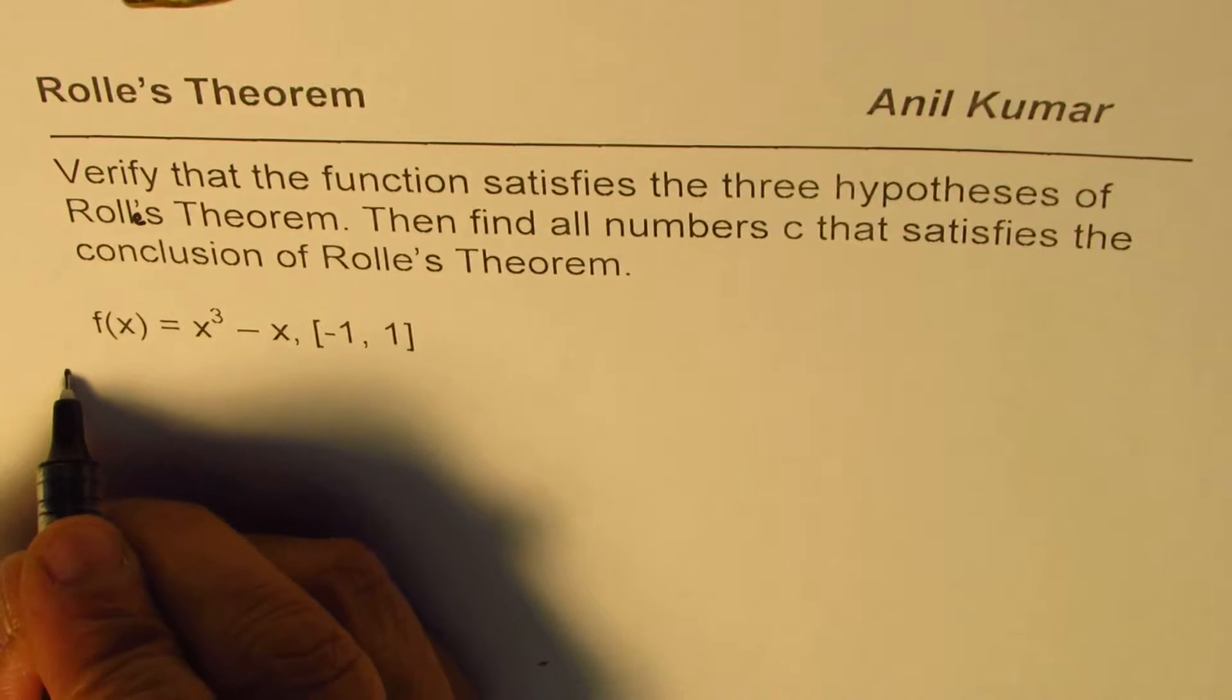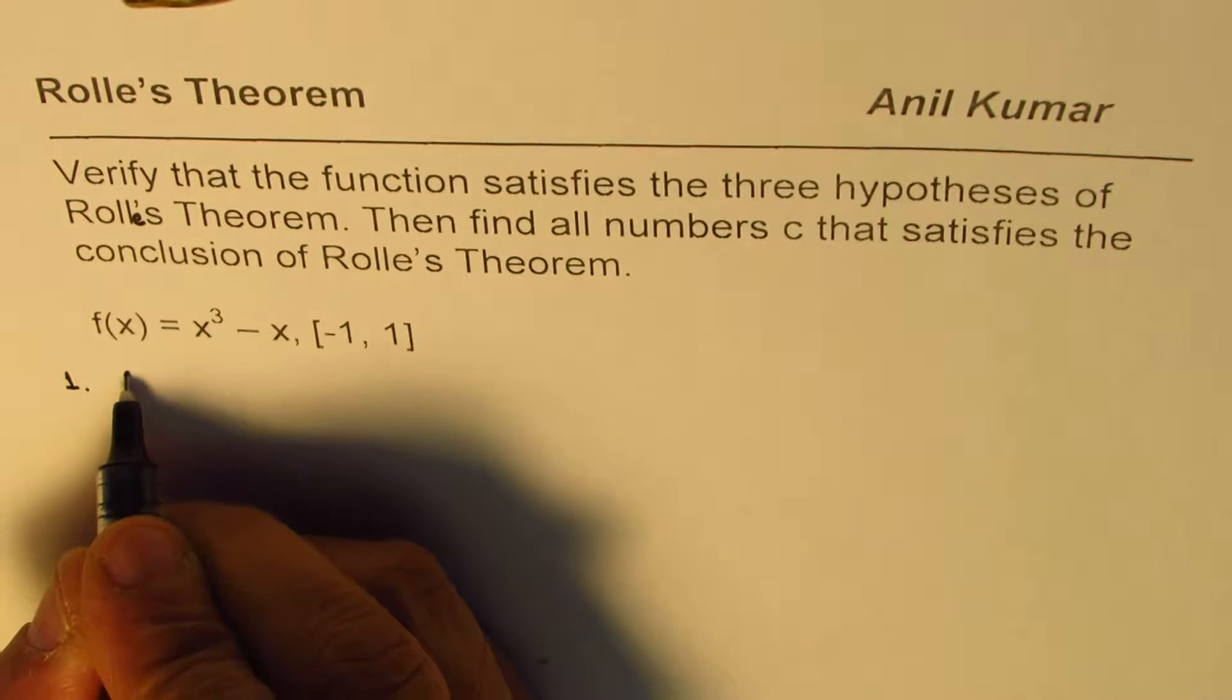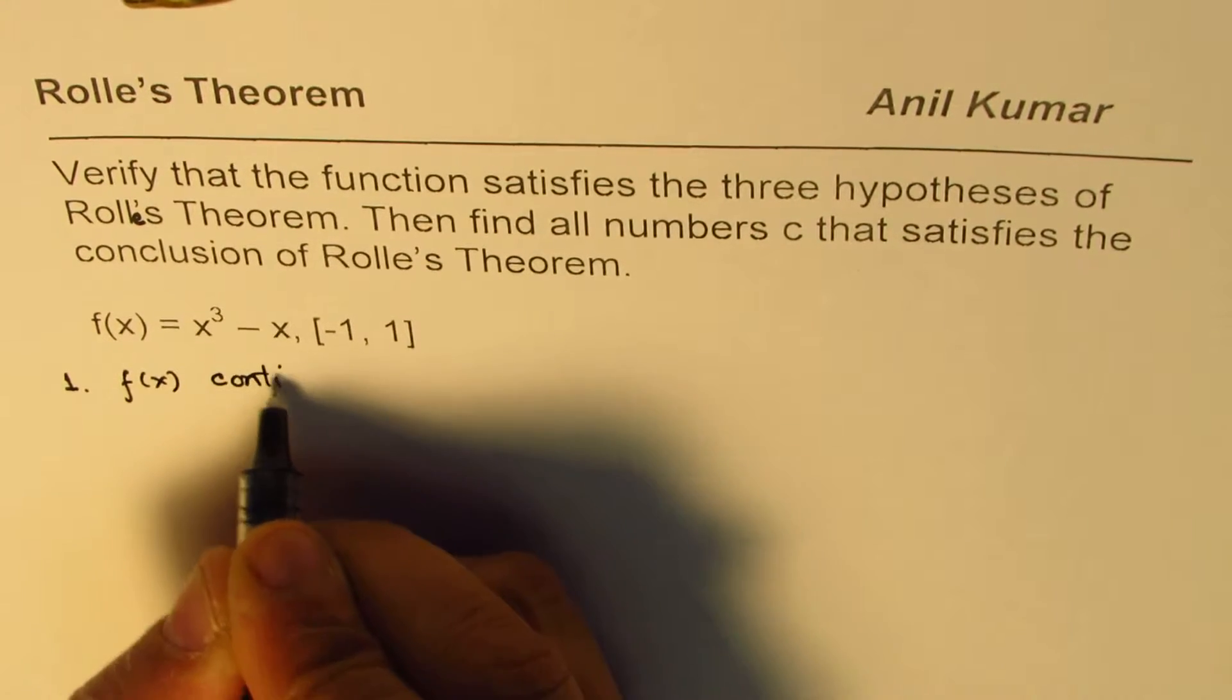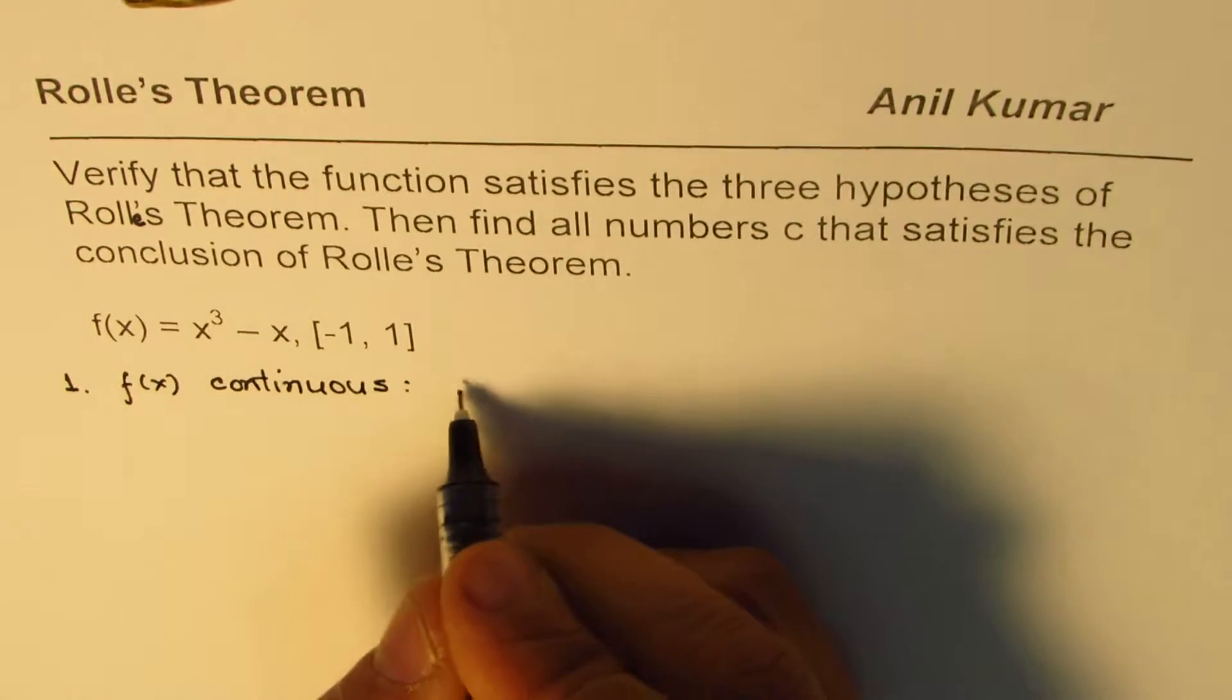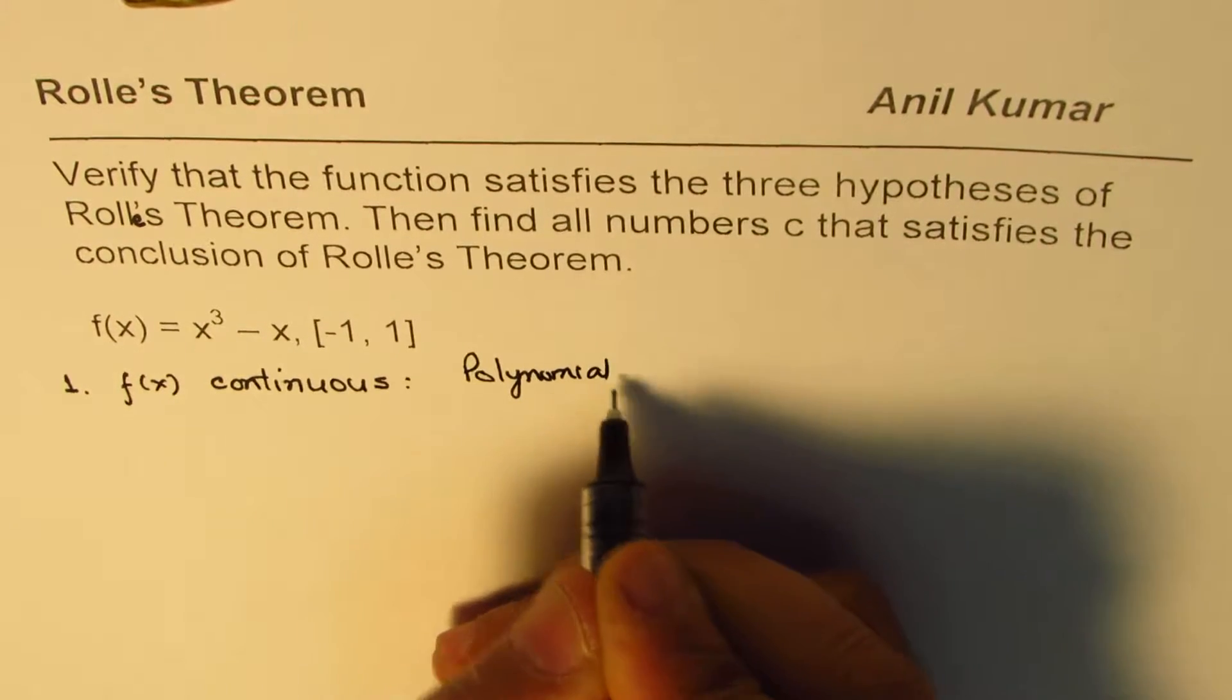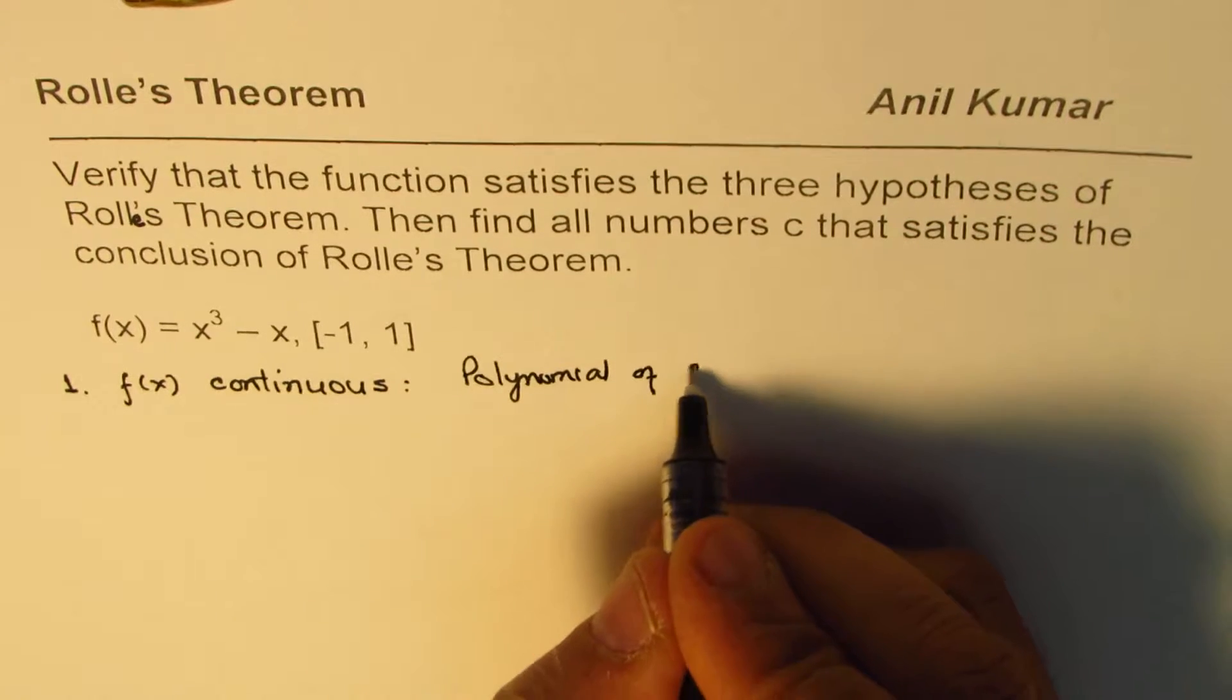Now the three points are: the very first one is that the function should be continuous, so we are looking for f(x) to be continuous. Since we know it is a polynomial of degree 3 in this case...